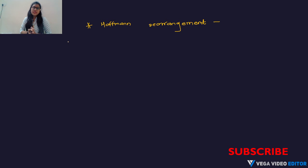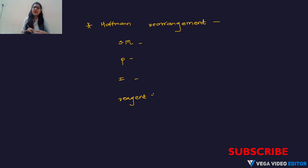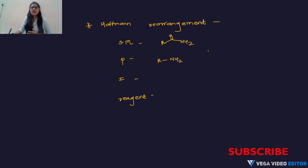Now we can see what are the starting materials used for Hofmann rearrangement, what is the product, what is the intermediate, and what are the reagents. The starting material for Hofmann rearrangement is an amide. The product is a primary amine, where one carbon is decreased — meaning it is a degradation reaction.